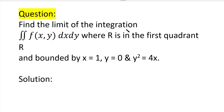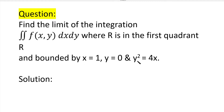Find the limit of the integration — double integral over R of f(x, y) dx dy, where R is in the first quadrant and bounded by the lines x equal to 1, y equal to 0, and y² equal to 4x.